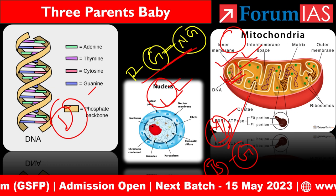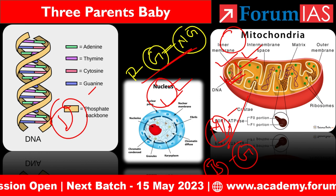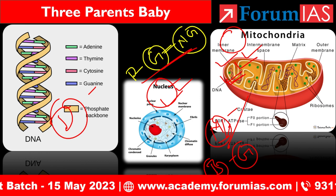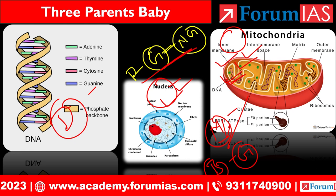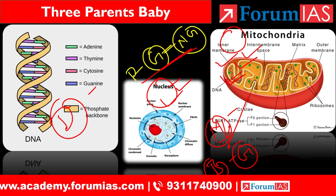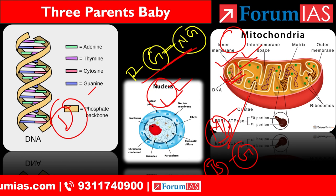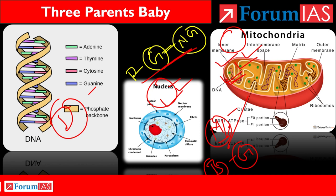If the mitochondria is defected, obviously the powerhouse will not create energy properly. This is an important point — defected mitochondria found in the mother gets transferred to the baby. This syndrome is generally called Leigh syndrome, which we have already studied. To prevent this transfer of defected mitochondrial genes to the baby, the 3-parents baby technique is used.